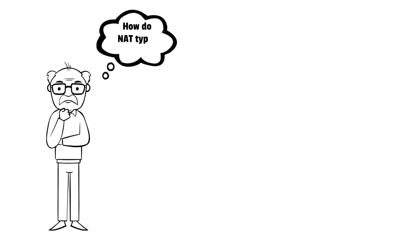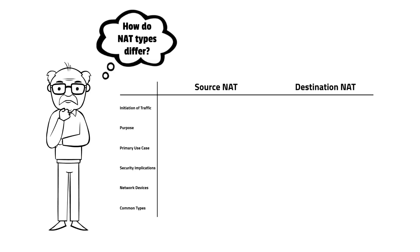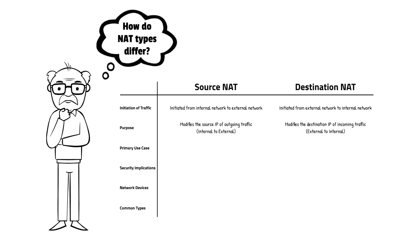There are two main types of NAT based on the direction of translation. Source NAT is initiated from the internal network when devices want to communicate with external networks, while Destination NAT is initiated from the external network when external users seek to access internal resources. Source NAT modifies the source IP address, changing it from internal to external, whereas Destination NAT modifies the destination IP address, changing it from external to internal. The primary purpose of Source NAT is to enable internal devices to access external networks, while Destination NAT allows external users to reach specific internal services.